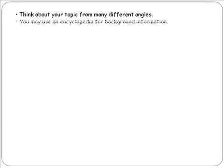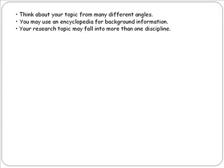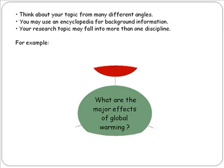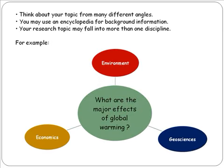When you have decided on a topic, try to think about it from many angles. Use an encyclopedia for background information, and remember that your topic may fall into more than one discipline. For example, the topic 'what are the major effects of global warming?' falls into three disciplines: Economics, Environment, and Geosciences.